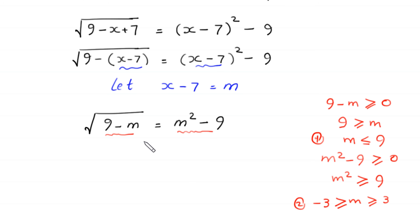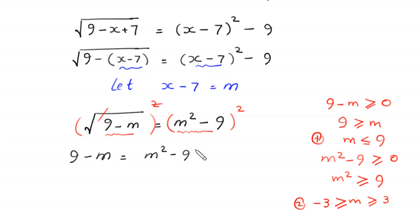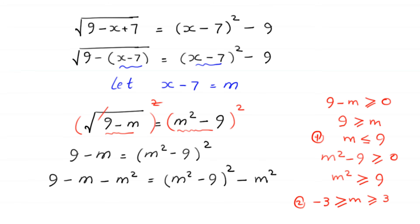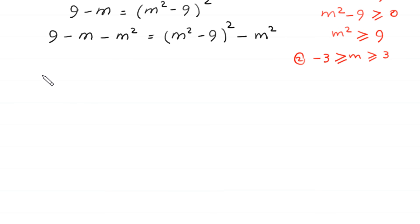Now squaring both sides: the square cancels the square root on the left, leaving 9 minus m equal to (m squared minus 9) whole squared. We subtract m squared from both sides, giving us negative m squared minus m plus 9 equals (m squared minus 9) squared minus m squared.